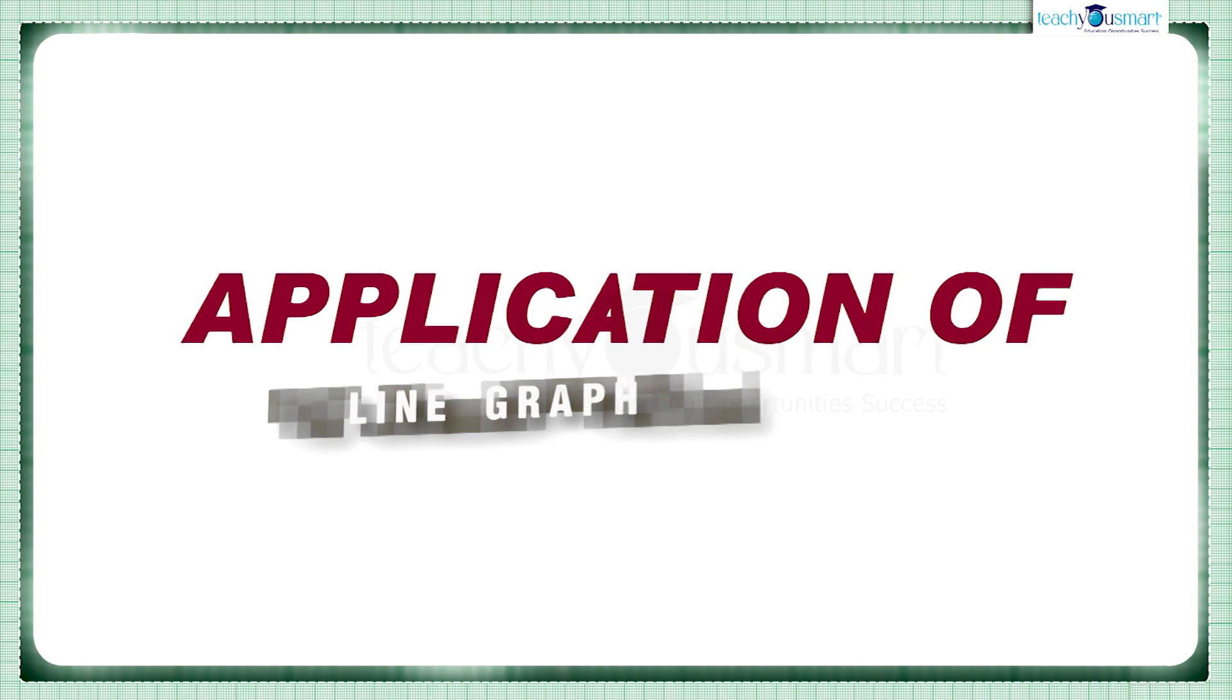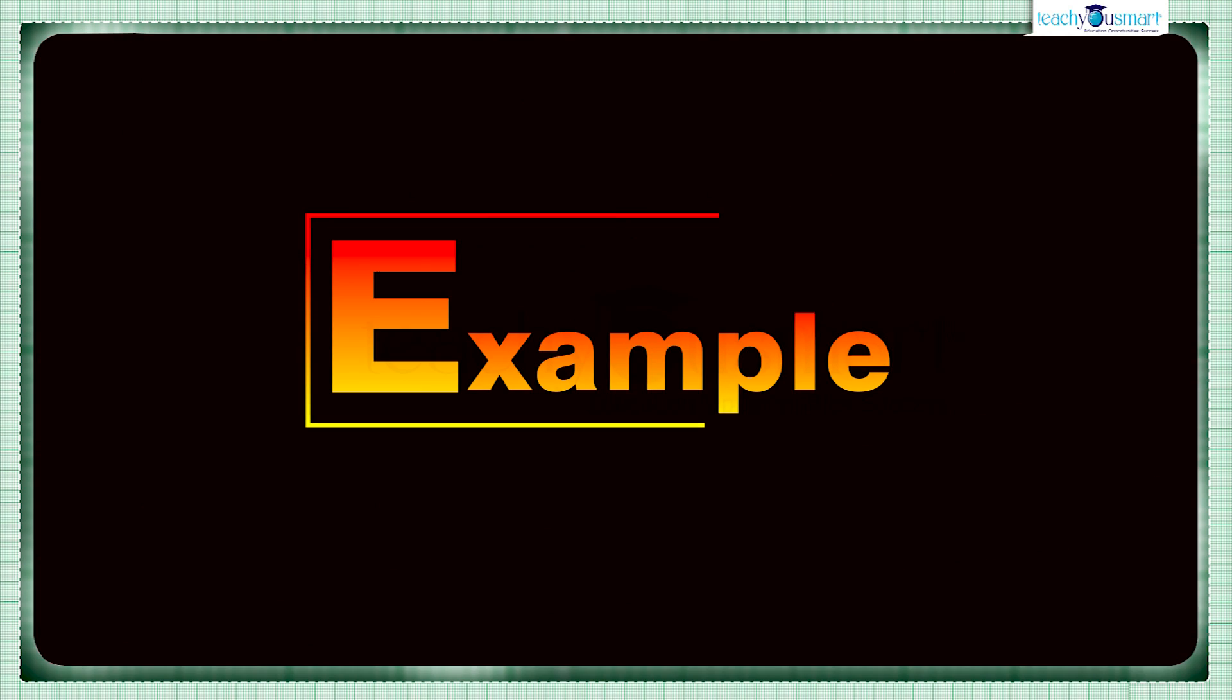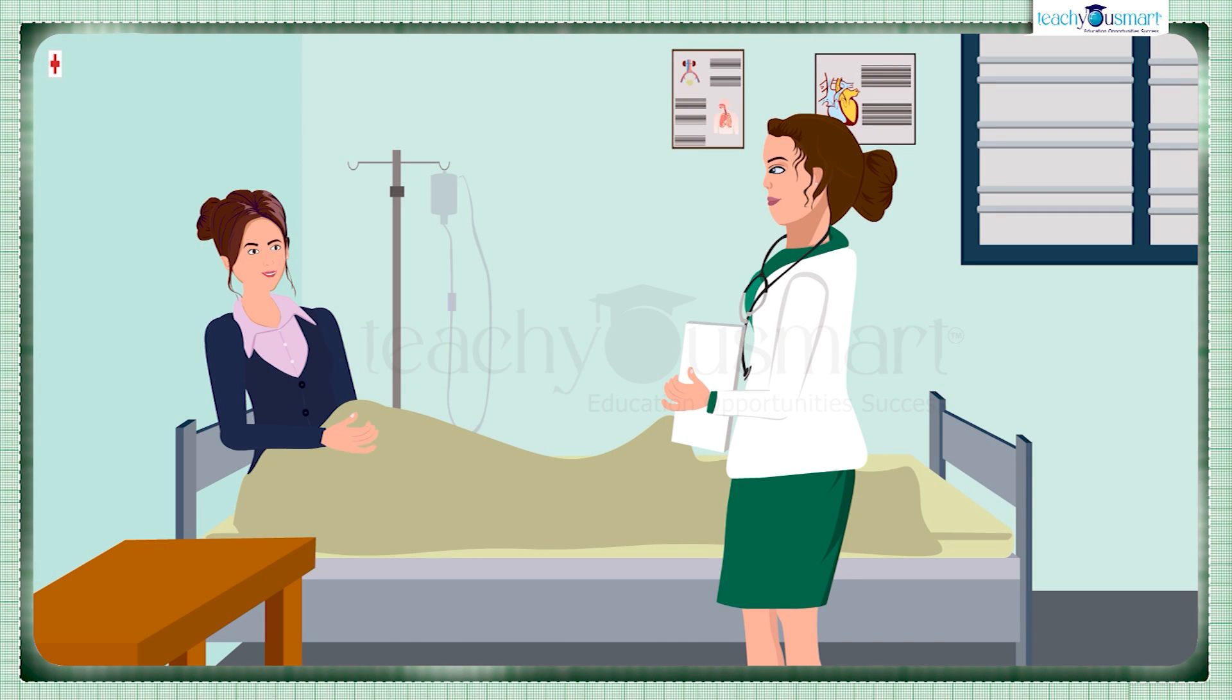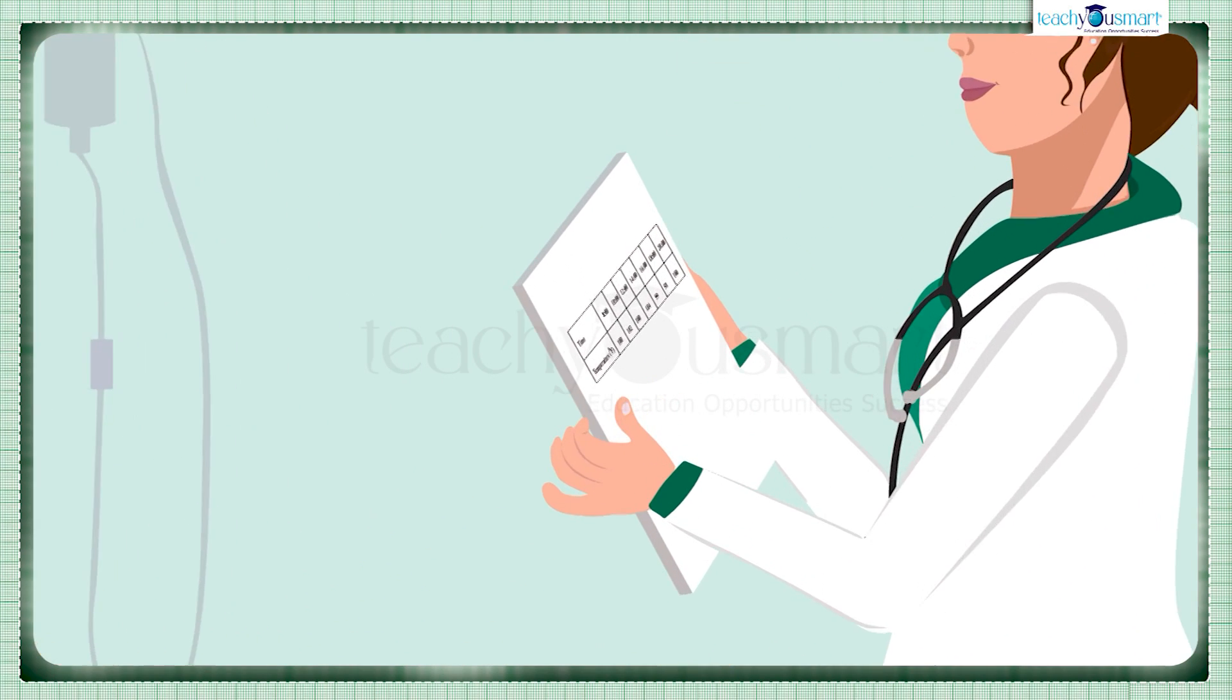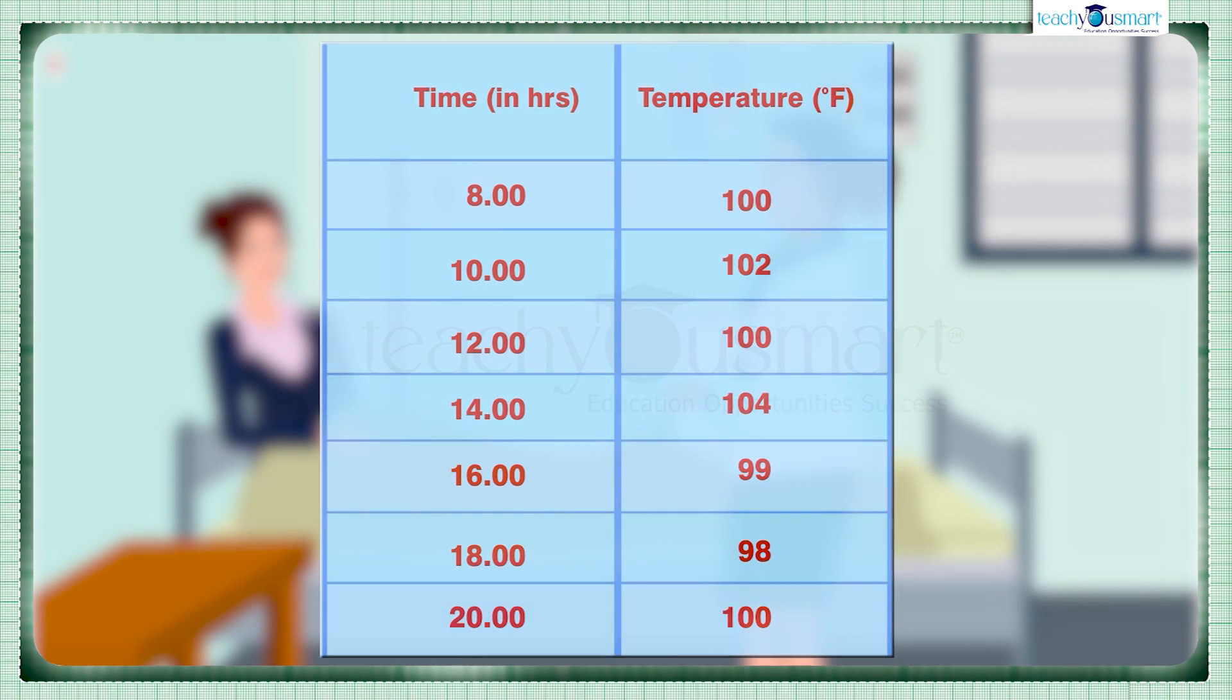Today we will see some applications of line graphs. Let's see an example: when Nina fell sick, her doctor maintained a record of her body temperature. First temperature was noted at 8 AM. After that, temperature was measured every two hours and recorded. Here the data is given in tabular form. Plot a graph to illustrate this information.